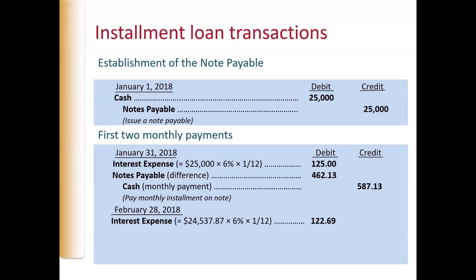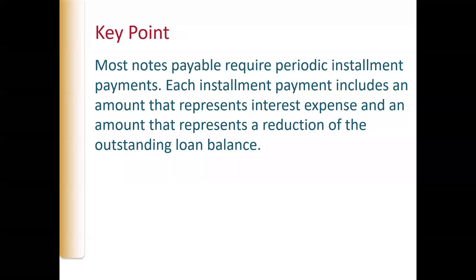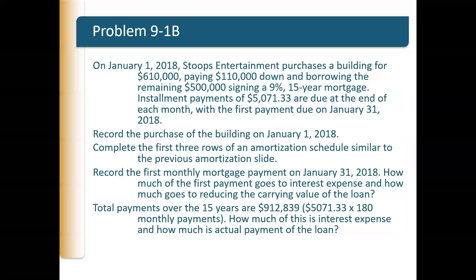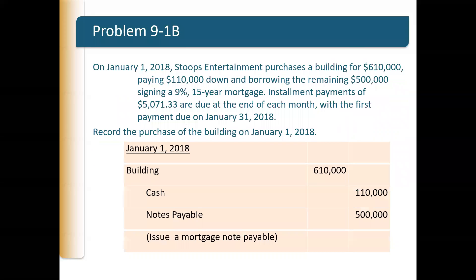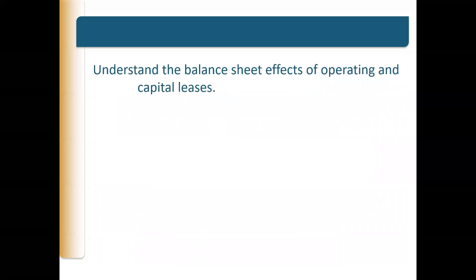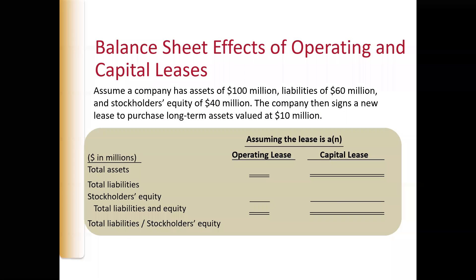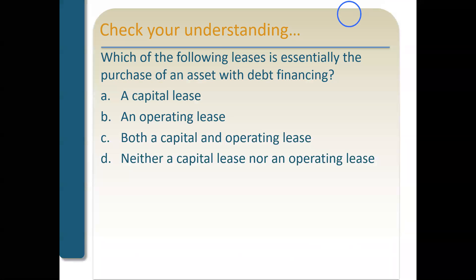We showed that there, and those numbers are going to change every single month. Because as the loan balance decreases, the interest will also decrease. Then from there, we went on to talk about bonds, and that's where we left off.